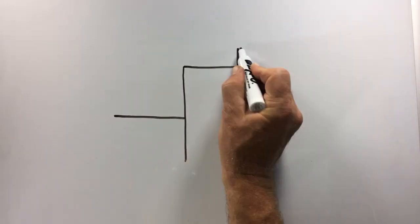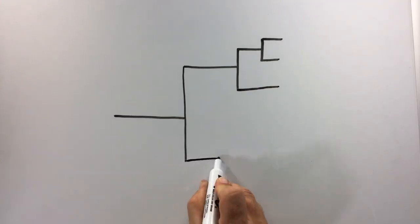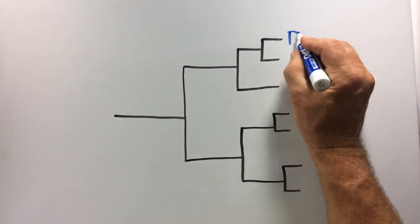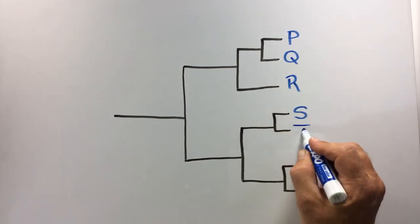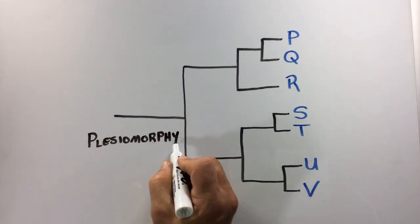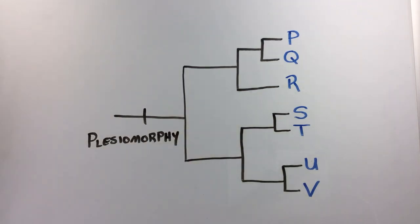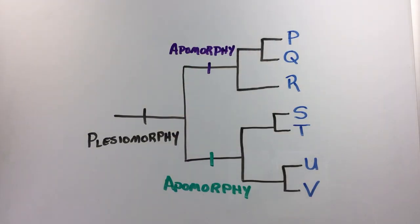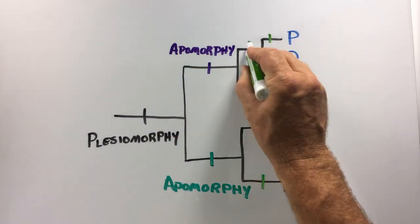Let's now consider a slightly more complex tree. In the phylogenetic tree shown here, species P through V form a single monophyletic clade. Members of this clade are unified by a shared ancestral trait called a plesiomorphy. Each clade, however, is defined by a unique derived trait called an apomorphy. And as the lines in this diagram show, apomorphies are found throughout the tree defining and characterizing each unique clade.